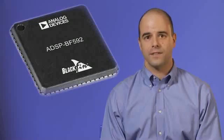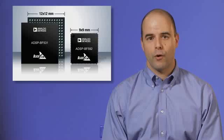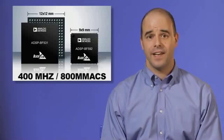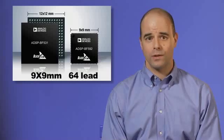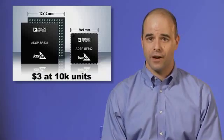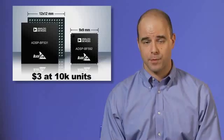Let's take a look at the details of ADI's new BF592 processor. With performance at 400 MHz and 800 Mmax per second in a 9x9mm 64-lead LFCSP or QFN package, priced at $3 at 10k units, it's a very attractive DSP.